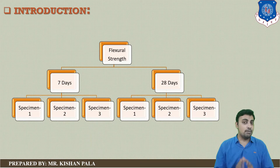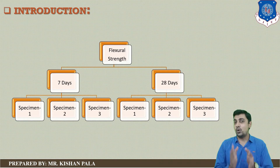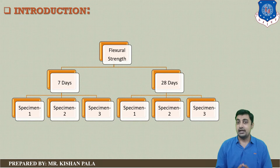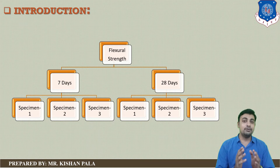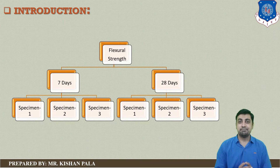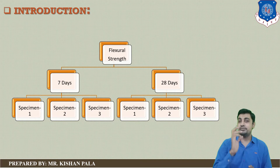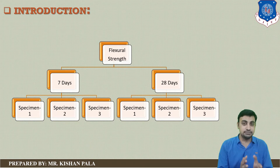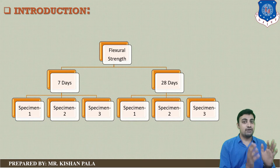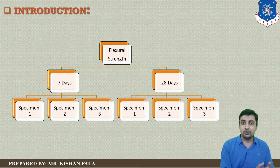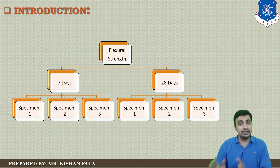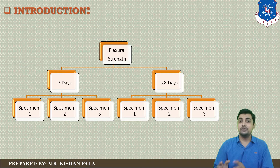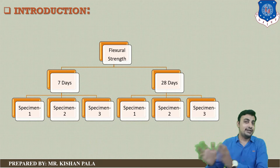Regarding the specimen requirements for finding the flexural strength, we find hardened properties at 7 days and 28 days. We require 3 specimens for each particular day — 3 beams for 7 days and 3 specimens for finding the flexural strength at 28 days.